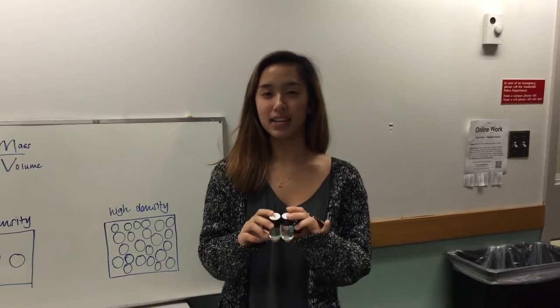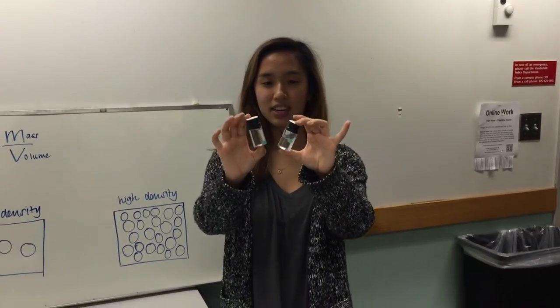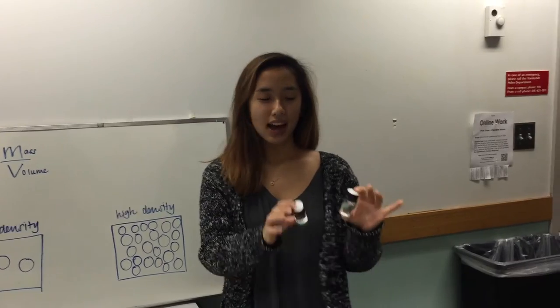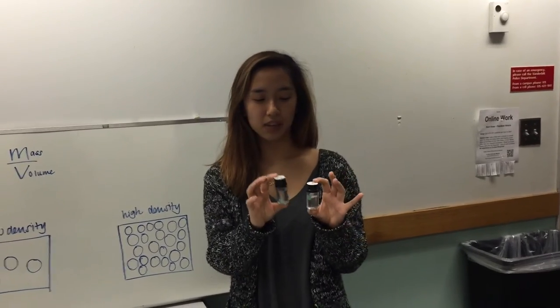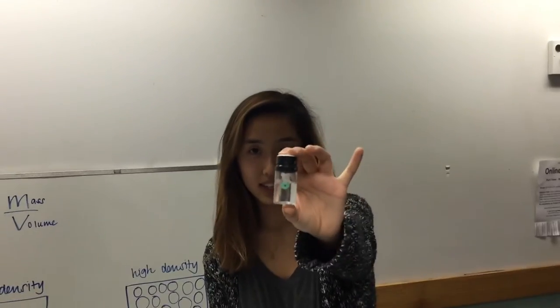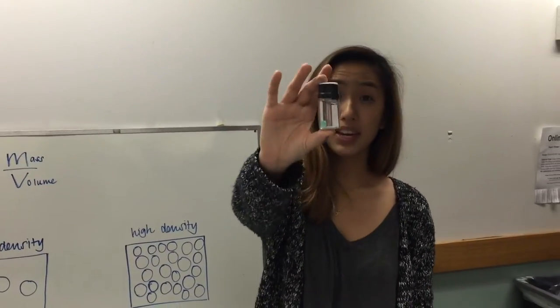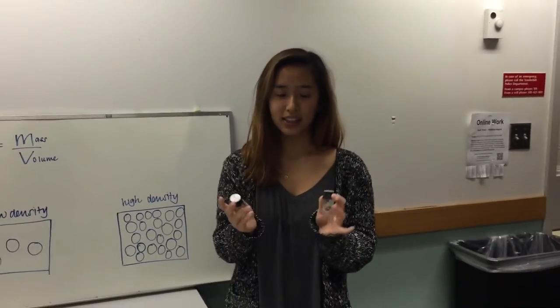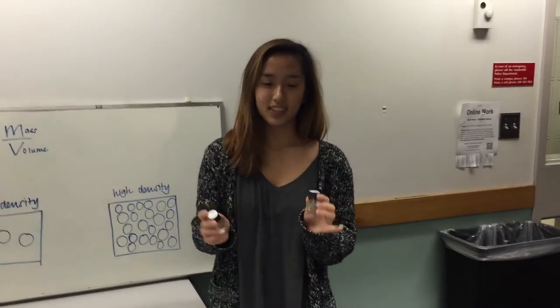For the next part of the lesson, you'll pass out two vials — each containing a bead and a liquid — to each pair. Ask the students to observe what is happening in each vial. They should see that in vial 1, the bead is floating at the top of the liquid, while in vial 2, the bead has sunk to the bottom. Ask them why they think this is happening, since the bead in both vials is clearly the same.